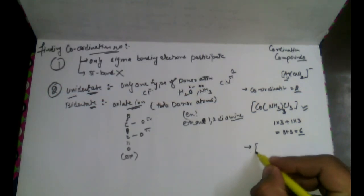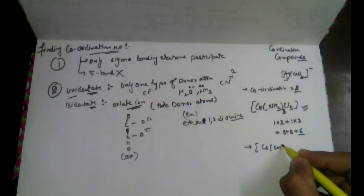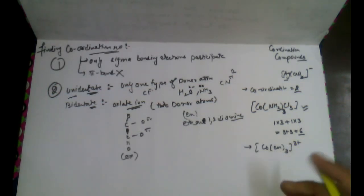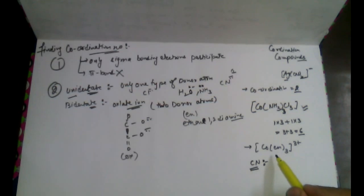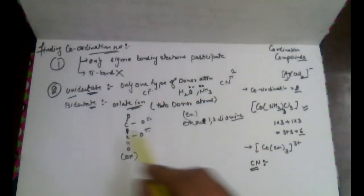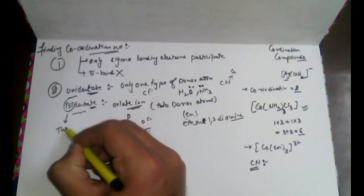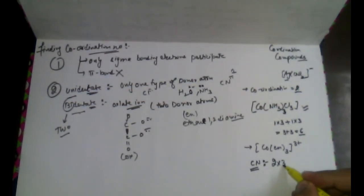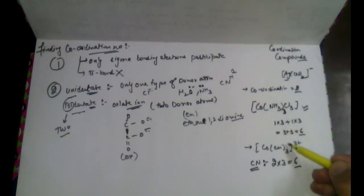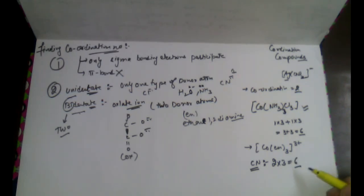The next example: if a teacher gives you a complex and asks for the coordination number — the short form is CN — you need to count only sigma bonds. En is part of bidentate; bi means 2, so 2 multiplied by 3 equals 6. If another ligand is also present, we add as discussed before. So the coordination number of this compound would be 6. Now you are able to calculate the coordination number of any type of complex.